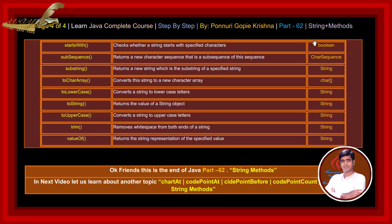toCharArray method converts the string to a new character array. toLowerCase method converts the string to lowercase letters. toString method returns the value of a string object. toUpperCase method converts the string to uppercase letters. trim method removes white space from both ends of a string. valueOf method returns the string representation of the specified values.